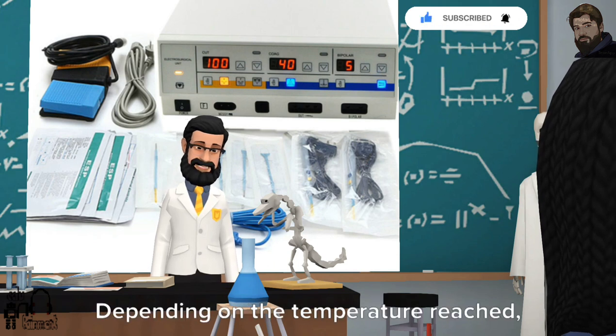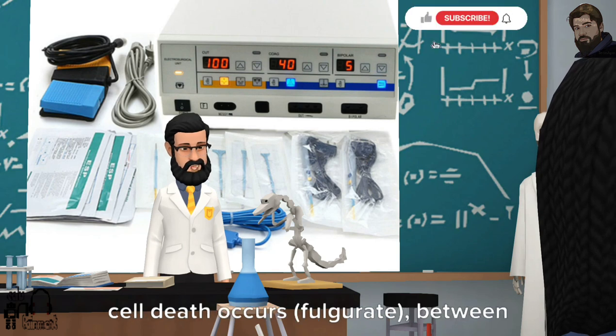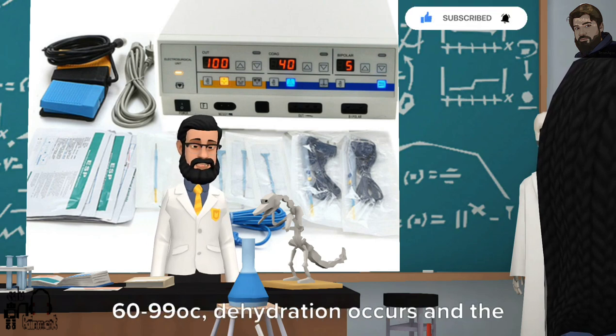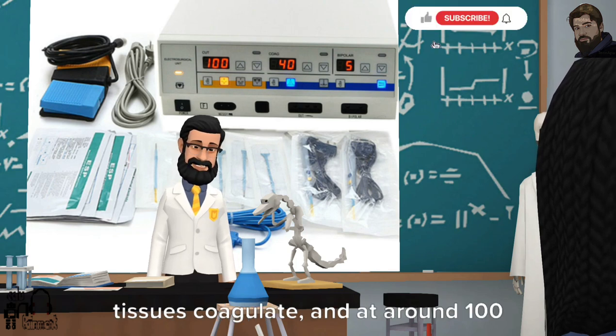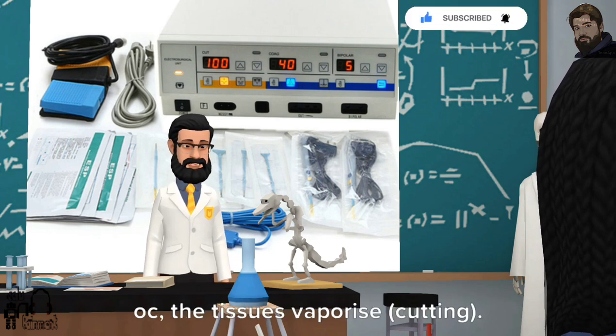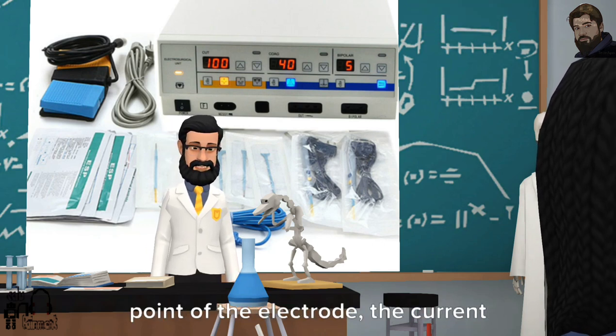Depending on the temperature reached, different results occur. At 60°C, cell death occurs (fulguration). Between 60-99°C, dehydration occurs in the tissues (coagulate). And at around 100°C, the tissues vaporize (cutting).